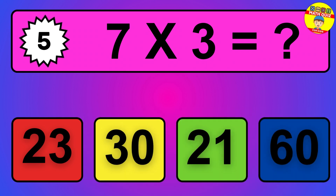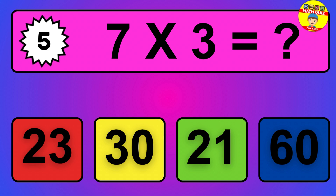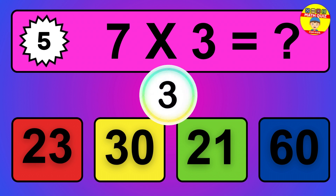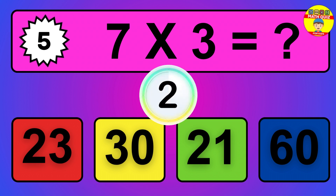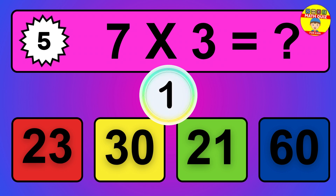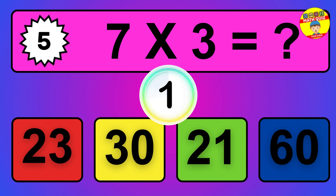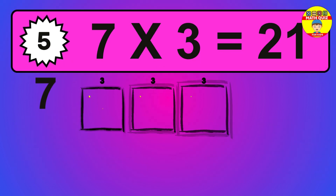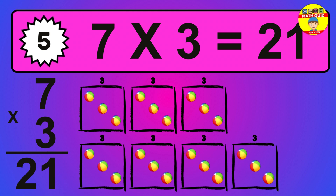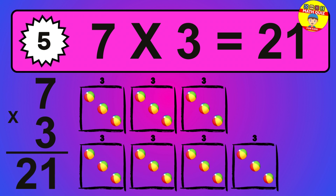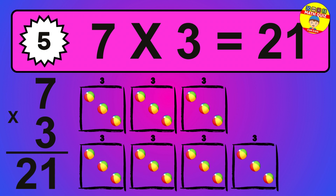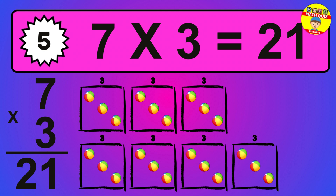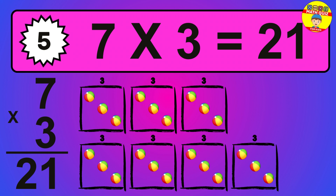Question 5. 7 times 3 equals what? So the answer is 7 times 3 is 21. To calculate, we have 7 groups with 3 balls each one. So how many balls do we have? 21 balls.